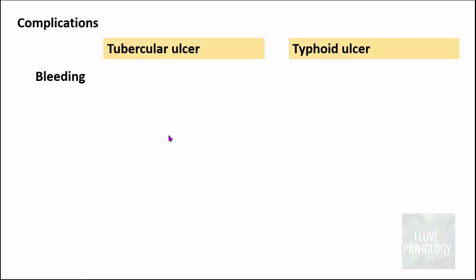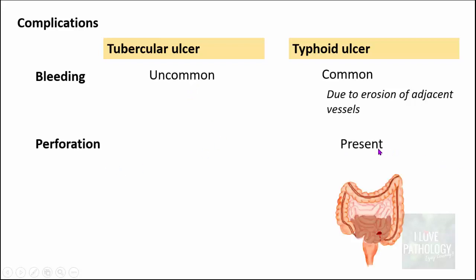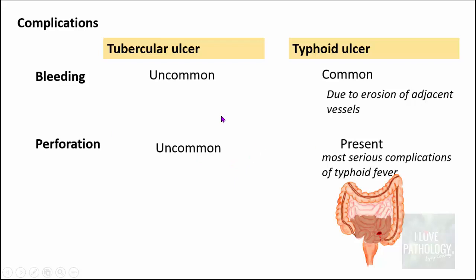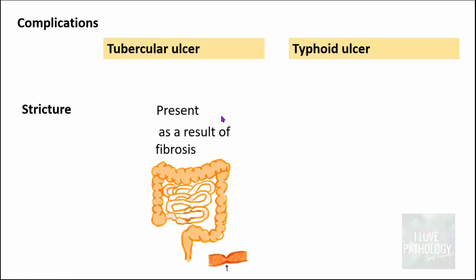Looking at the complications: bleeding is very common in typhoid ulcers due to erosion of adjacent vessels, and sometimes the bleeding is so severe it warrants blood transfusion. Bleeding is uncommon in tubercular ulcers. Perforation is also more common in typhoid ulcers and is the most serious complication of typhoid fever; it is very uncommon in tubercular ulcers. What is common in tubercular ulcers is stricture formation, which occurs in long-standing cases during the healing phase due to fibrosis, and is often the cause of obstruction. Typhoid ulcers do not form strictures because the ulcers are longitudinal and often heal without fibrosis.